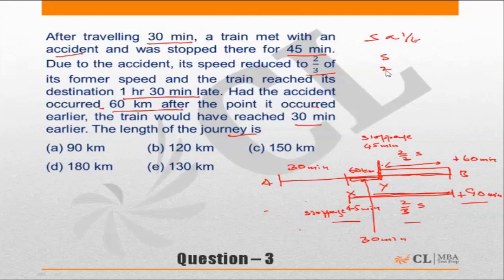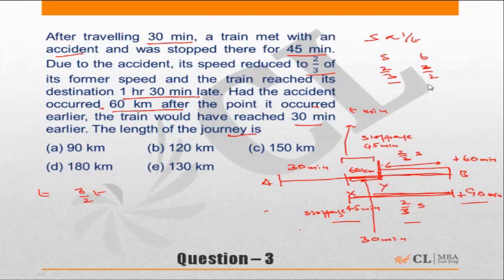Speed has become 2/3 times the original, which means time taken should become 3/2 times. If the train was originally taking T minutes to cover the 60 km stretch at normal speed, it now takes 3/2 T minutes. The increased time is 3/2 T minus T, which equals T/2. This T/2 is the delay over that stretch.